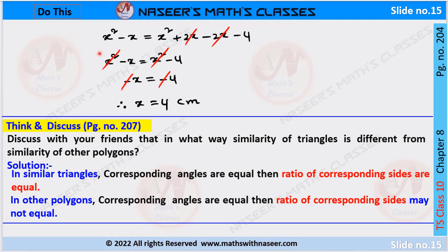Simplification we can write it as x squared minus x is equal to x squared plus 2x minus 2x minus 4. Here we can cancel minus 2x plus 2x, then we can write it as x squared minus x is equal to x squared minus 4. In LHS RHS has x squared so we can cancel it.